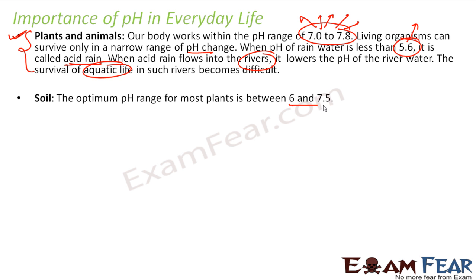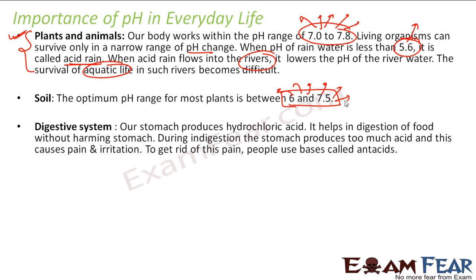Soil also has an ideal pH range of 6 to 7.8. Sometimes the soil becomes acidic, so we add base to it. Sometimes it becomes too basic, so we add fertilizers to bring it back to this ideal pH range, because this is the most suitable range for any soil.